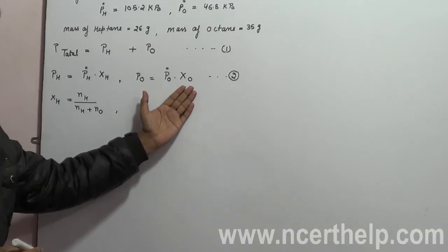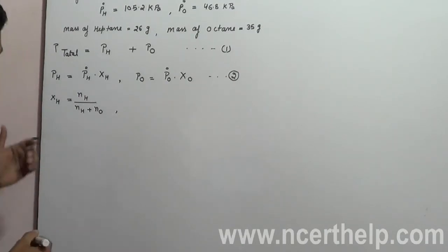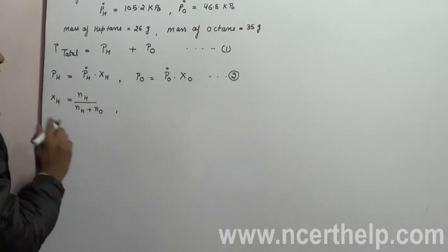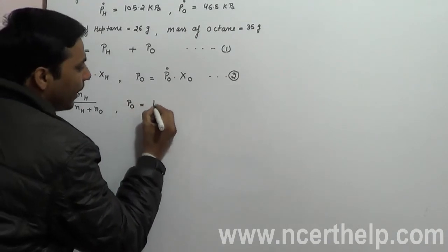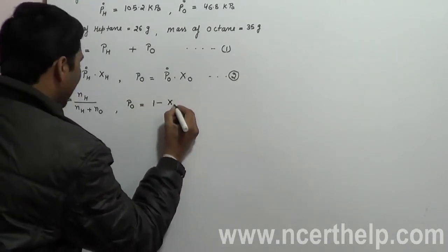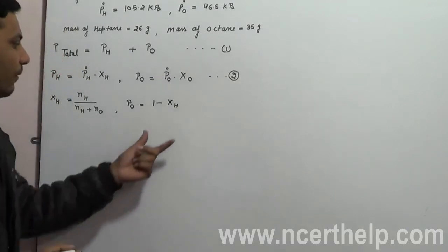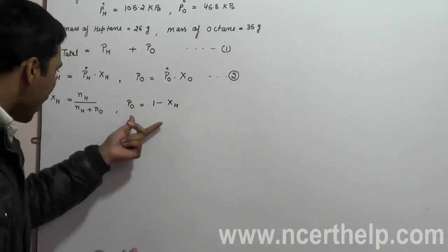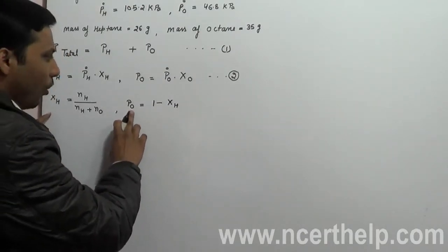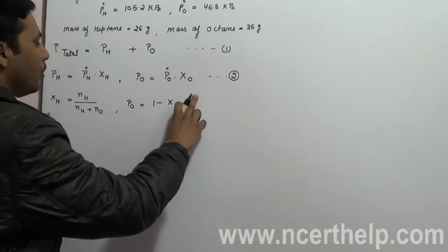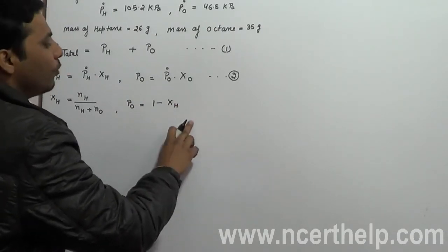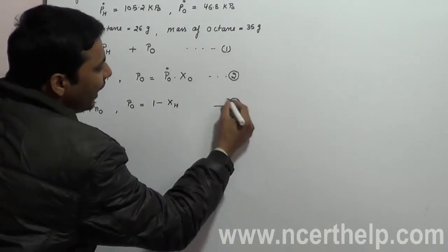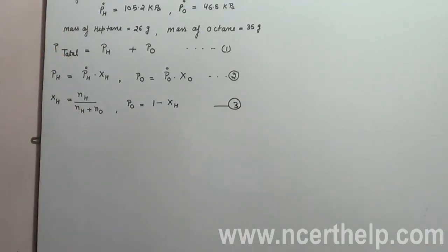For X_O, the molar fraction of octane, once we have X_H we can calculate it by subtracting: X_O equals 1 minus X_H, because the sum of molar fractions is always equal to 1. Alternatively, you can use the formula: X_O equals number of moles of octane divided by number of moles of heptane plus number of moles of octane.